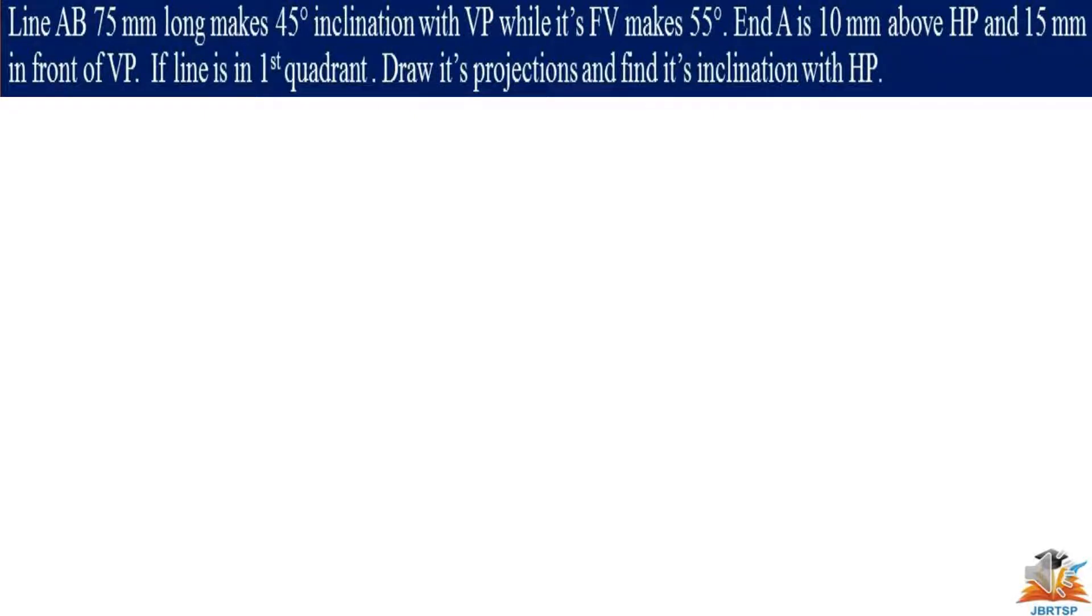A line of 75 mm long makes 45 degree inclination with vertical plane while its front view makes 55 degree. End A is 10 mm above the horizontal plane and 15 mm in front of vertical plane.